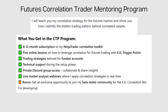I want to present the Futures Correlation Trader Mentoring Program, where I will teach you my correlation strategy for the futures market and show you how I identify the hidden trading pattern behind correlated assets. What you get is a 12-month subscription to the correlation toolset, five online lessons providing guidance on the method — including how to leverage it for trading futures using EG Trigger Points — trading strategy and funded accounts, technical support, access to a private Discord group, opportunities to ask questions, and participation in live webinars where I conduct real-time correlation analysis. The method is designed for trigger point users who wish to take their trading to the next level.